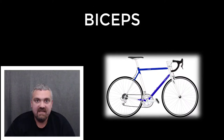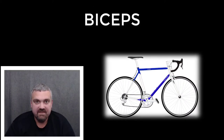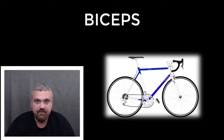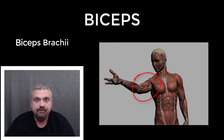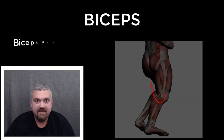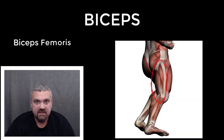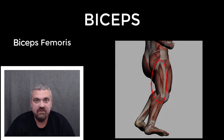First we have biceps. Bi means two, so any biceps muscle is going to have two heads. Your two key examples would be the biceps brachii in your upper arm and the biceps femoris, which is one of your hamstring muscles. They both have two heads.